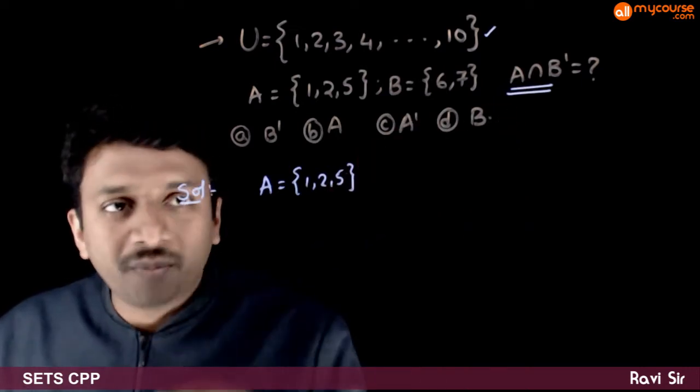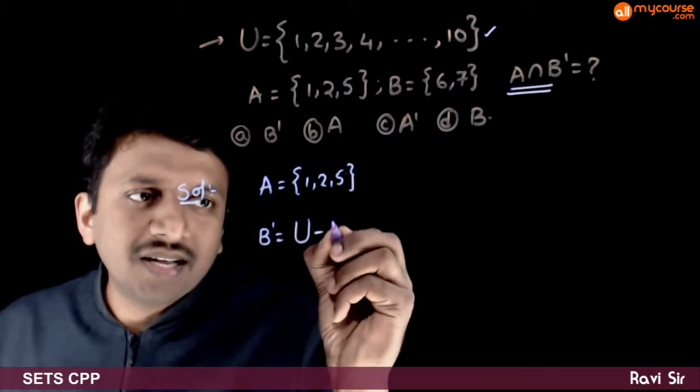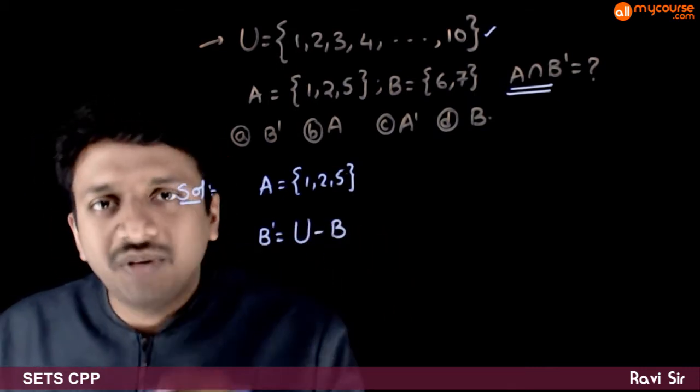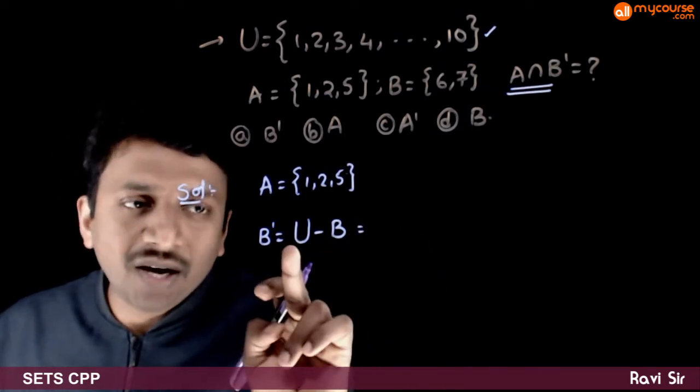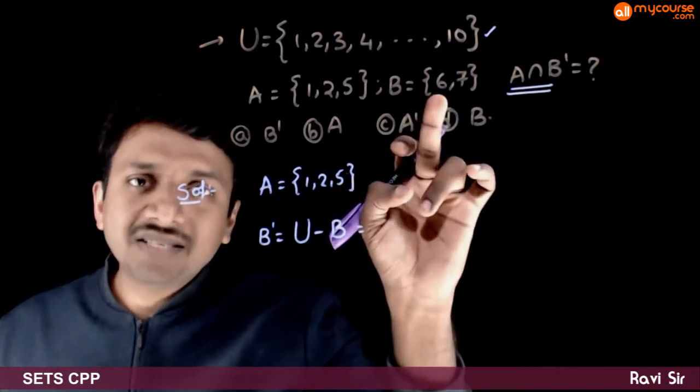So what is B complement? B complement is nothing but the universal set excluding B, which is U minus B. That is, you need to take out the elements of B from the universal set. So B is 6, 7.